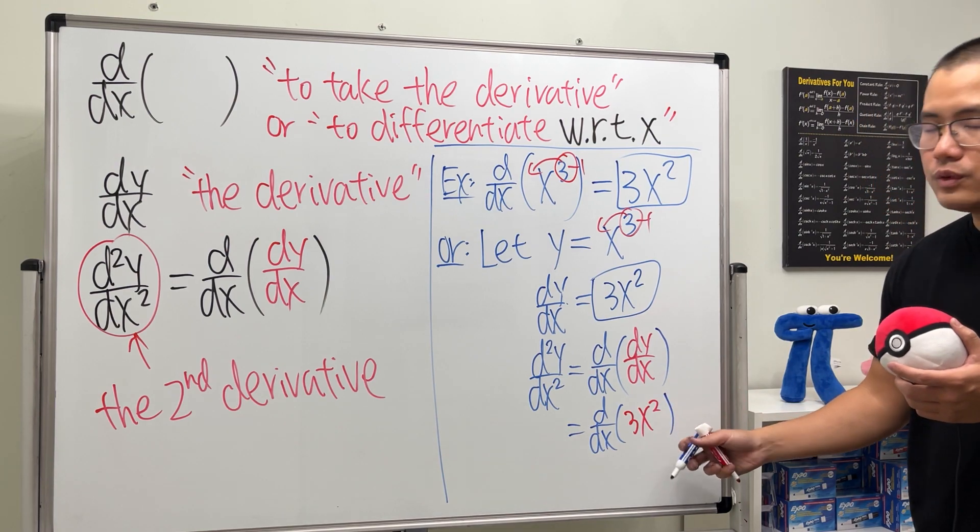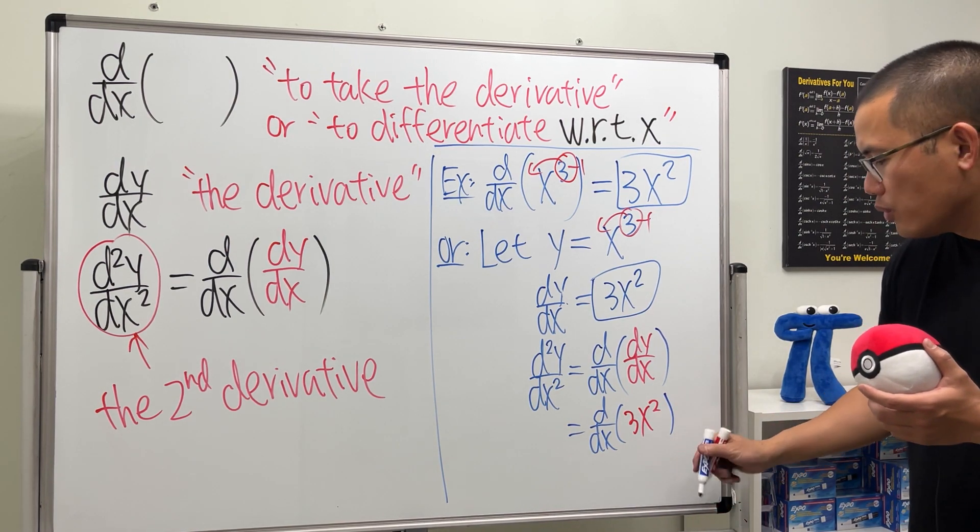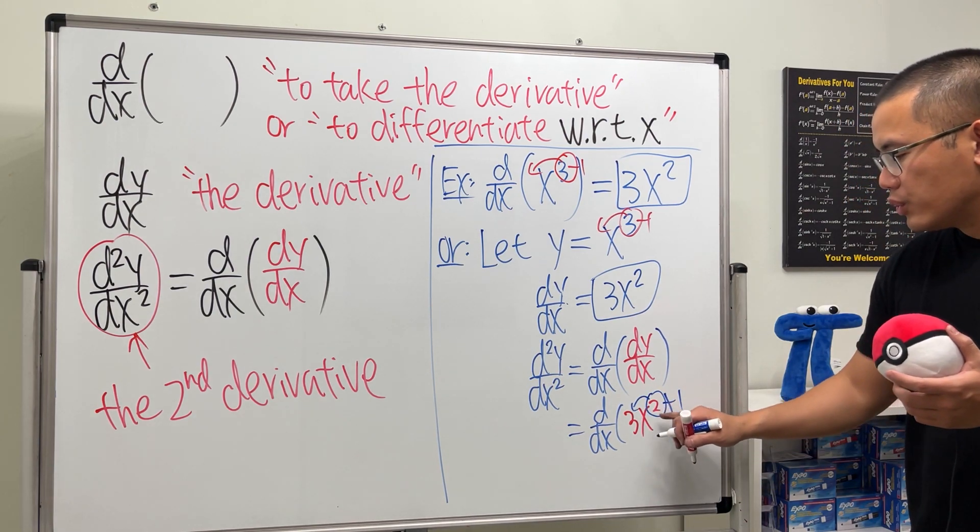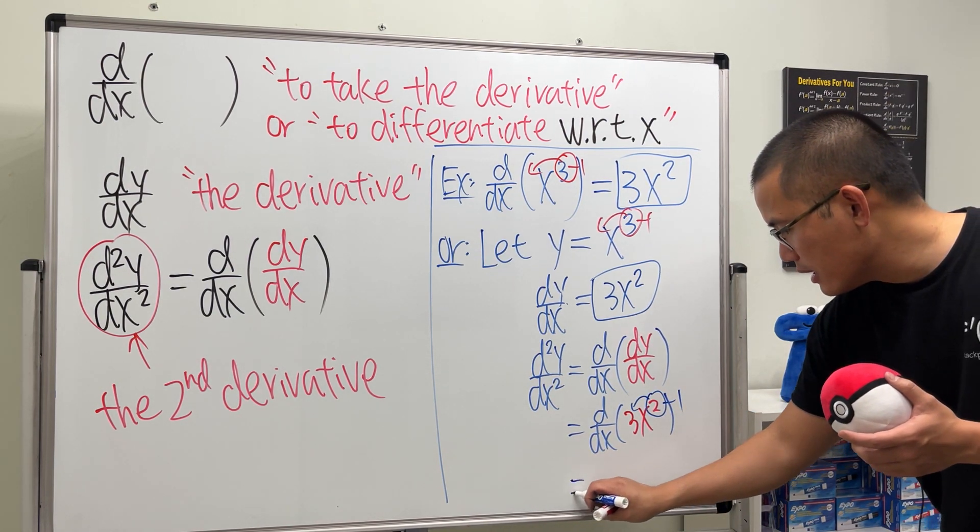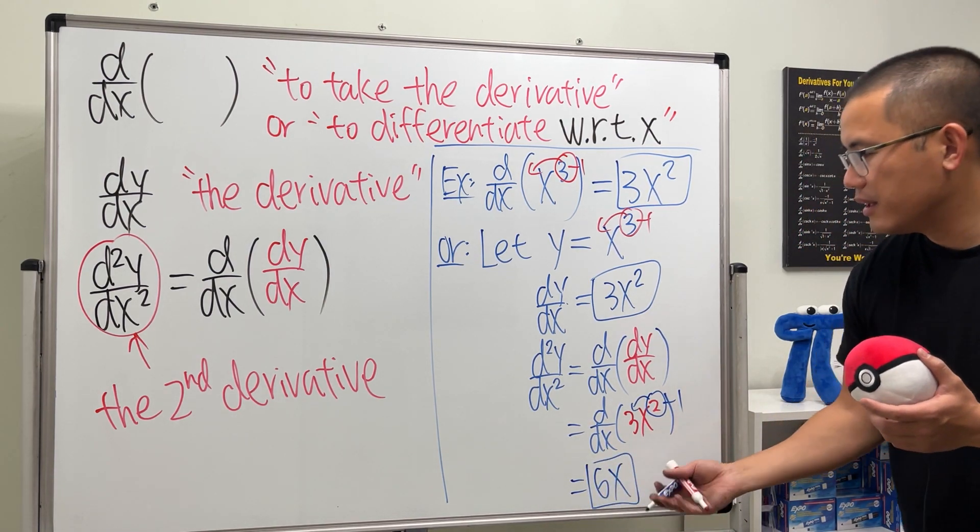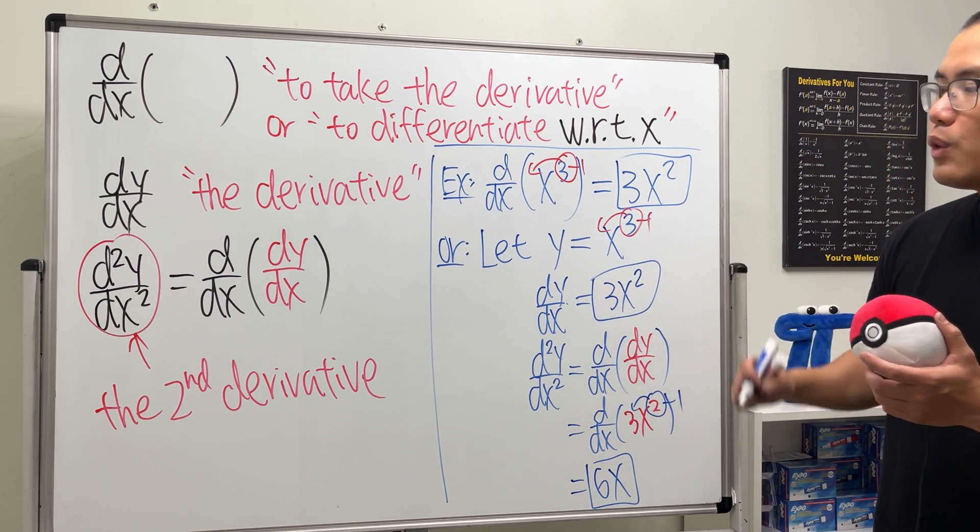So this right here is the same as differentiating 3x². And for this we can just go ahead and use the power rule, put the power to the front minus 1, 2 times 3 is 6, and then x to the first power, and that will be it. And this right here is the second derivative for this one.